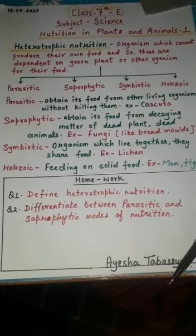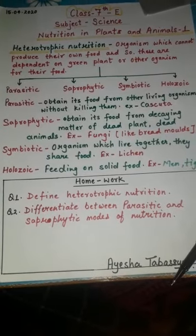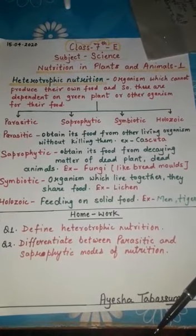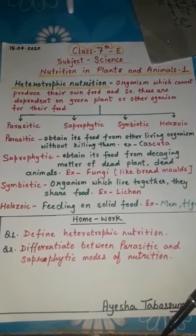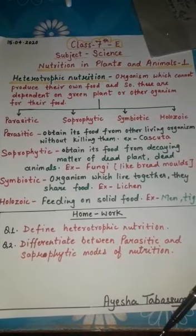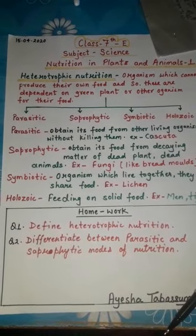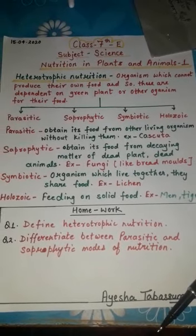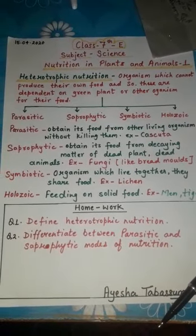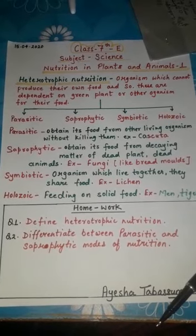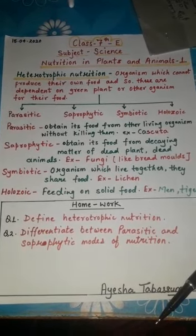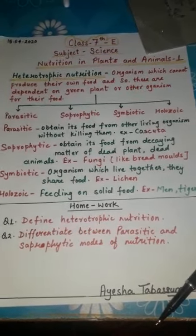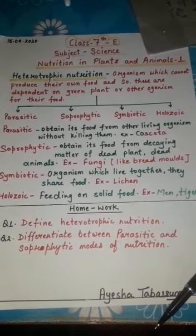Third is omnivores. Animals which eat both plants and animals are called omnivores. For example, dog, cat, bear, etc. Human beings are also omnivores. Fourth and last are scavengers. Vulture, jackals, and hyena are scavengers because they feed on dead animals.